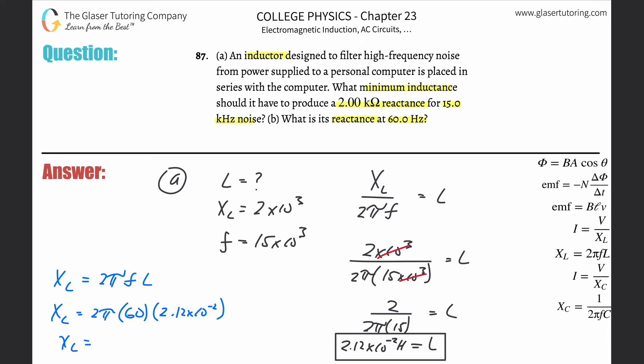Using the exact value from before: 2 pi times 60 times that exact answer works out to be basically exactly 8 ohms. The units are ohms, because inductive reactance behaves like a resistance.